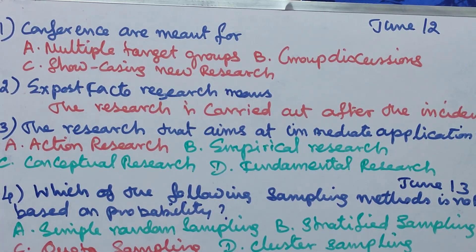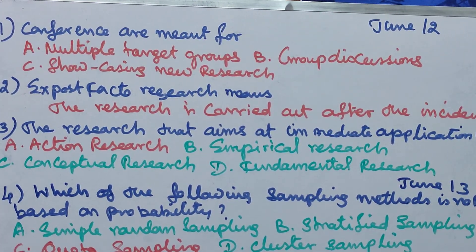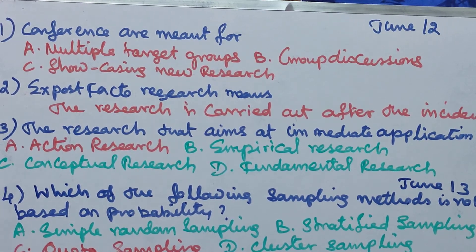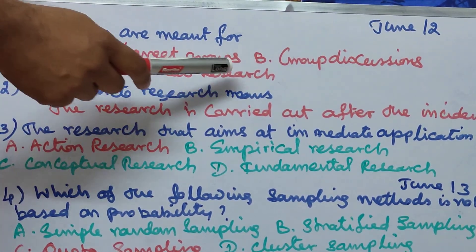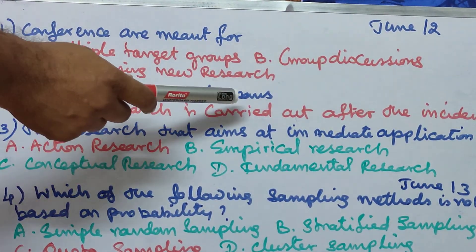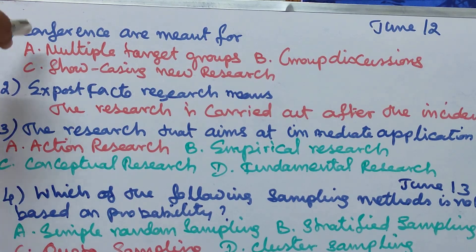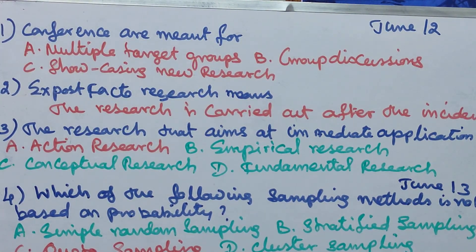NET Paper 1 Research Aptitude, June 2012, Question 1: A conference is meant for multiple target groups and group discussion showcasing new research. Since it addresses multiple target audiences, the correct answer is 'all of the above.'